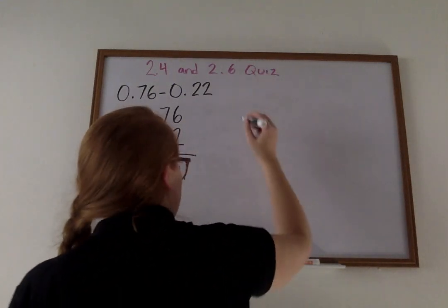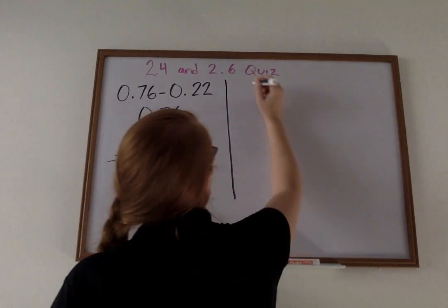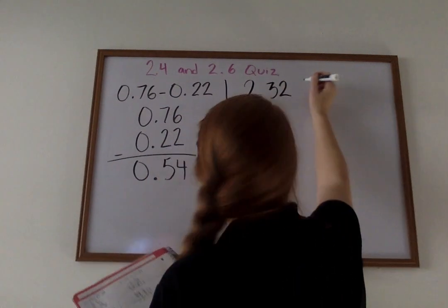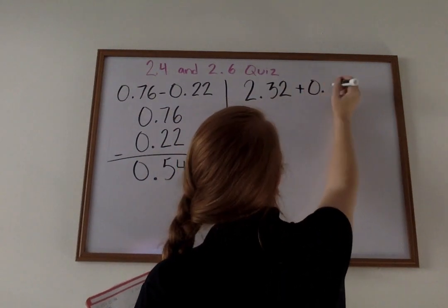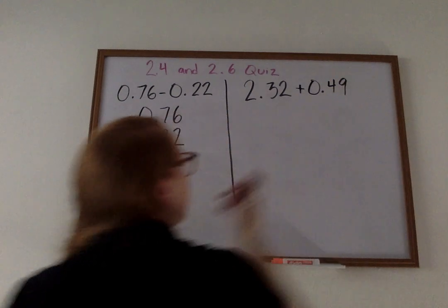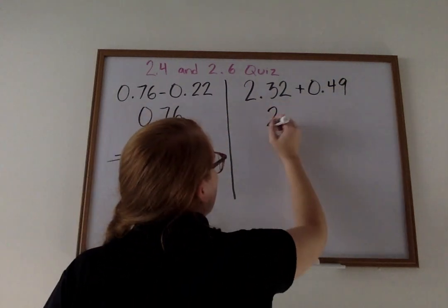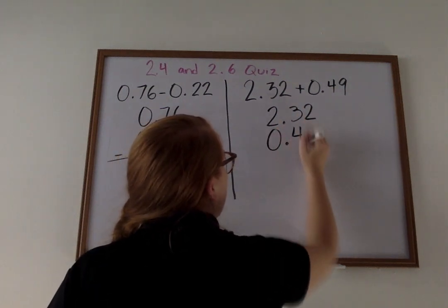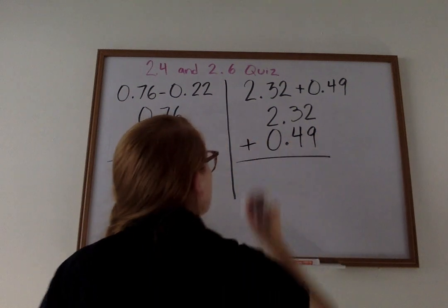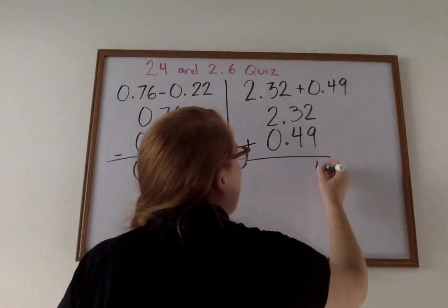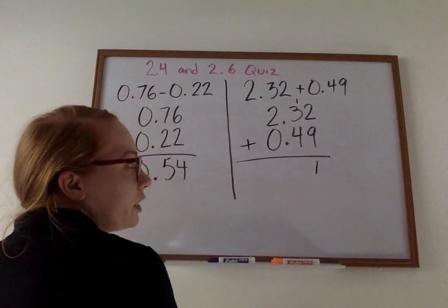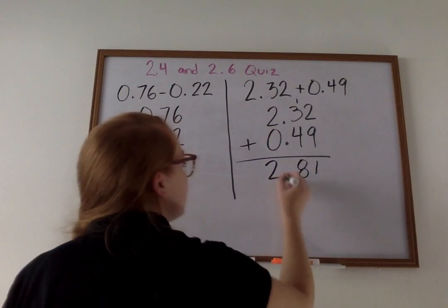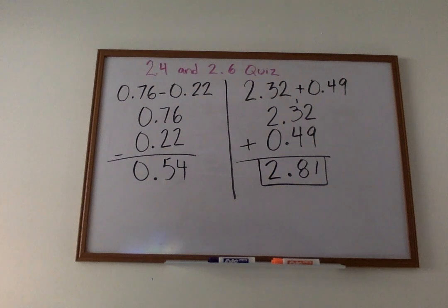Next, let's try another one. Sometimes you'll have a whole number involved, such as 2 and 32 hundredths plus 49 hundredths. We're going to take our first number, which is 2 and 32 hundredths, put it on top of 49 hundredths, and we're adding. 9 plus 2 is going to give us 11. 3 plus 1 is 4. 4 plus 4 is 8. Bring down our decimal. 2 plus 0 is 2. 2 and 81 hundredths is our answer.